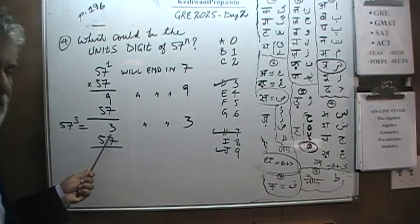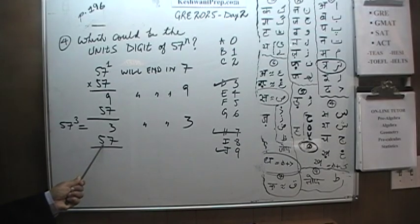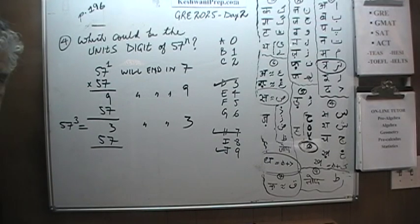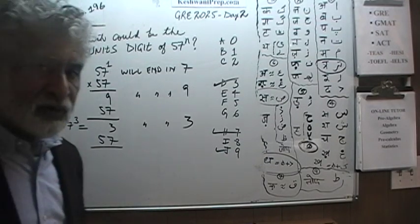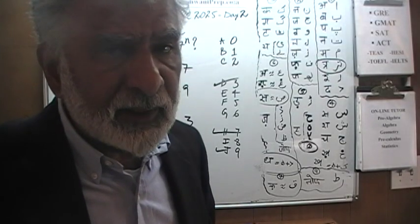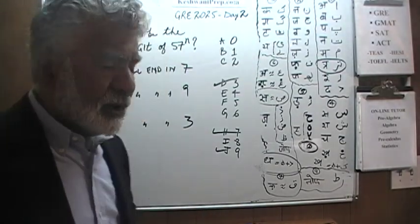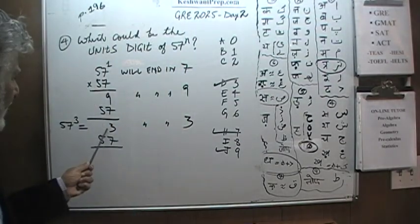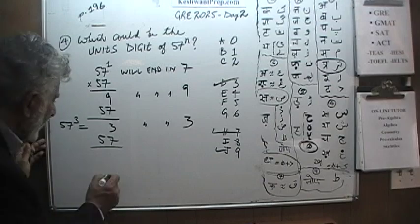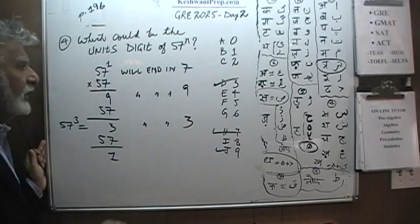And if it ends in a 3 — any number that has a unit digit of 3 — if you multiply that by 57, the unit digit is going to be 3 times 7, which is 21, so it ends in 1. That works.